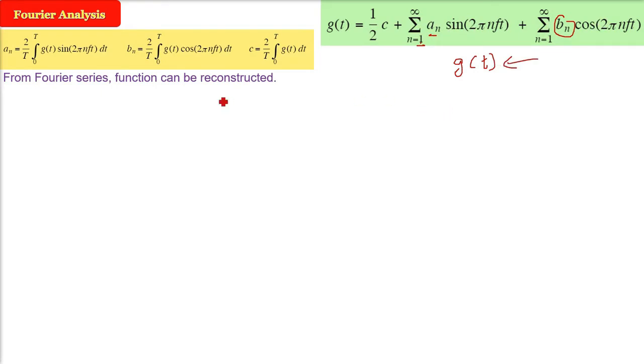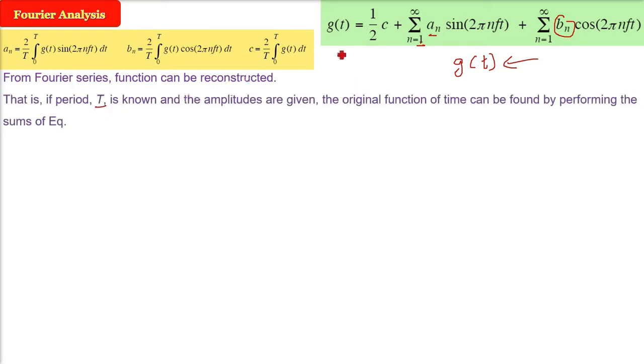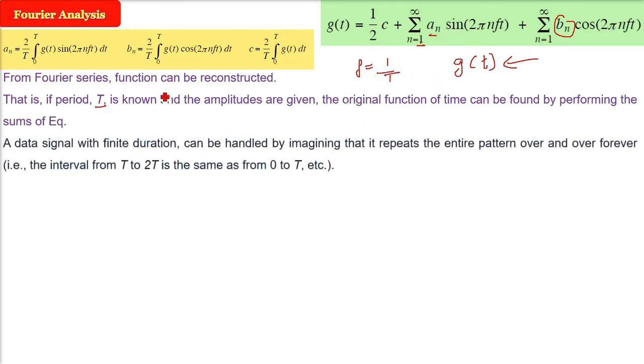So this g(t) or any function you take. We are taking function as g(t) which is our periodic function. We will take an example also. So from Fourier series, the function can be reconstructed and please note the sigma or the addition is from 1 to infinity. What I am trying to suggest is that if period T, that is time period is known, the frequency, the amplitudes are known, that is the coefficients. The original function of the time, this can be found, this can be retrieved by performing the sum of this equation.